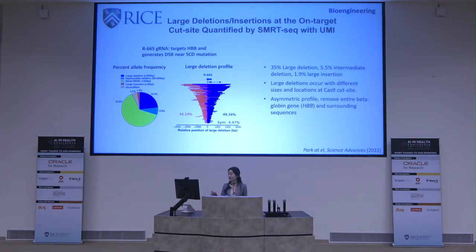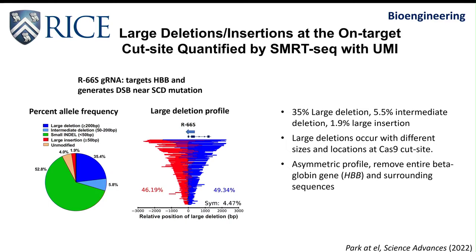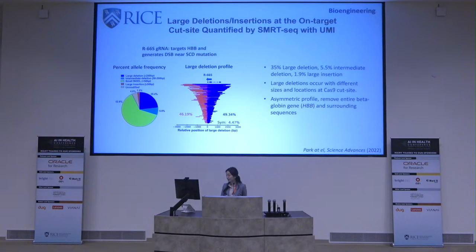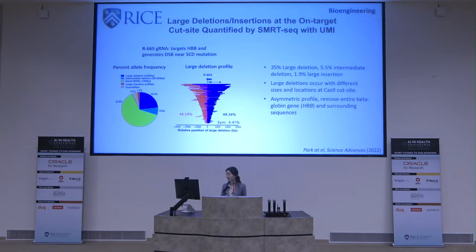Using SMRT sequencing with UMI to analyze edited patient cells at HBB, we quantified 35% large deletions, 5.5% intermediate deletions, and 1.9% large insertions. These over 40% combined large modifications were previously missed by short-read NGS. The graph on the right shows the large deletion profile around the CRISPR-targeted site — large deletions occur around the cut site with different sizes and locations. We also observed a very asymmetric large deletion profile, and some of these large deletions remove the entire HBB gene we wanted to correct, as well as surrounding sequences.